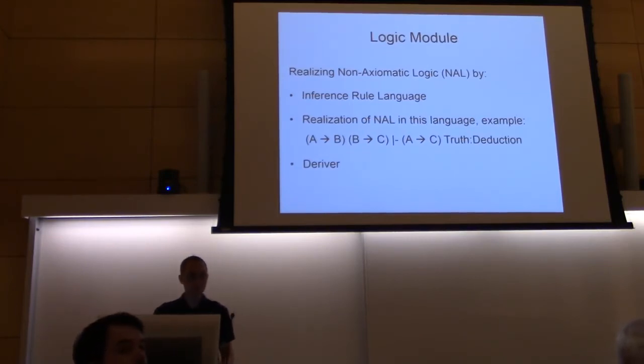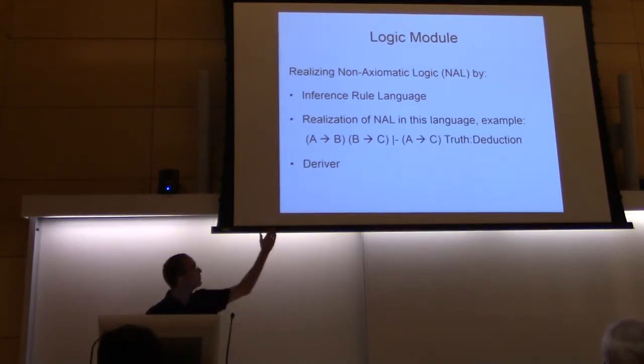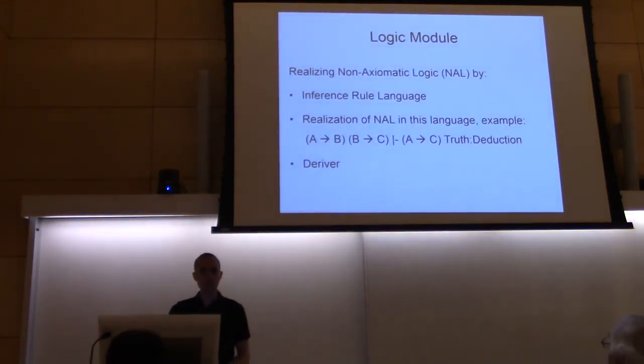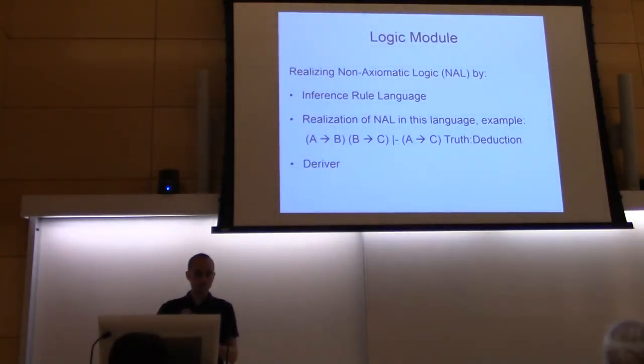In order to support the logic, there is a logic module in the system. This logic module was developed to be able to express the inference rules efficiently. So there is an inference rule language which allows us to express the inference rules. Everything that we needed to do was to represent the NAL logic rules in this language. Here we see one example of a deduction rule. Additionally, we needed to add a deriver. This deriver is nothing else than whenever we give it two premises, it tries to match those NAL rules which match to the premises, which have the structure of the premises, in order to derive the conclusions.